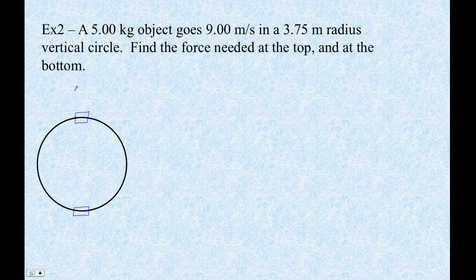So here's this 5 kilograms. And it's going in this circle, and we want to know what the force needed to keep it in the circle at the top and the bottom. Let's make this guy go clockwise. So our tangential velocity is 9.00 meters per second, and the radius is 3.75 meters, because apparently that's a very popular radius.